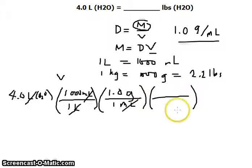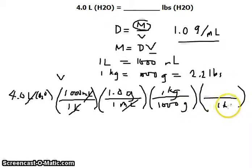From grams, we can convert that to pounds. And we're going to do that this way, that 1 kg is equivalent to 1,000 grams, and that 1 kg is 2.2 pounds.